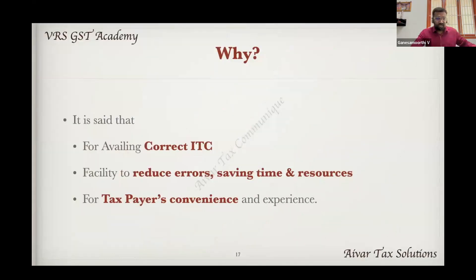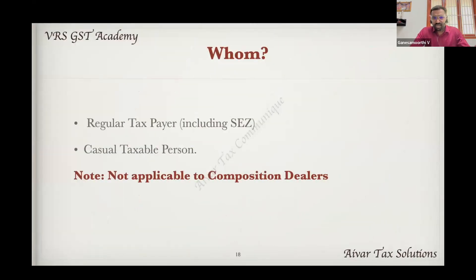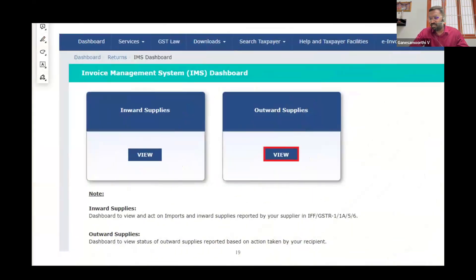What is the IMS system? For availing correct ITC. So the ITC is a very good job — you can get the error in the ITC. For the taxpayers' convenience, all registered taxpayers are applicable, other than composition taxpayers. Composition dealers have ITC — that's why IMS is applicable to them. So the regular taxpayer in the Special Economic Zone, the casual taxable person — IMS is applicable to them.